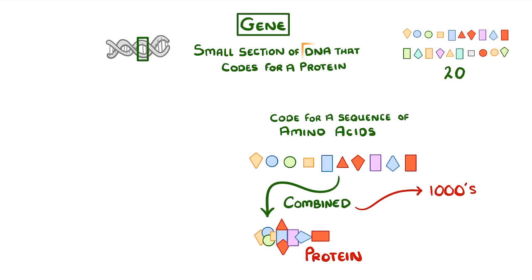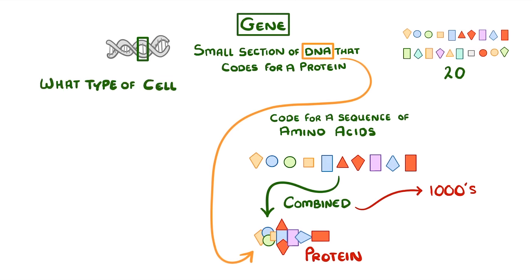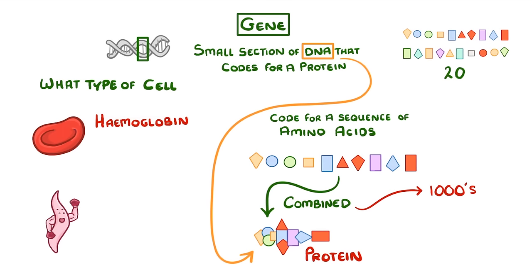So as we can see, DNA determines which proteins the cell produces, which in turn is going to determine what type of cell it will be. For example, a red blood cell would need loads of the protein haemoglobin, because that's what transports oxygen around the body, while muscle cells would need lots of the proteins that we use for muscular contraction.